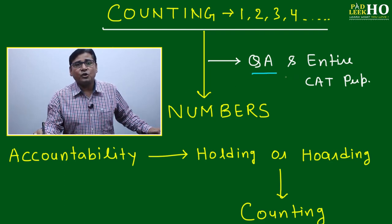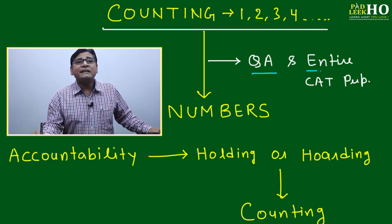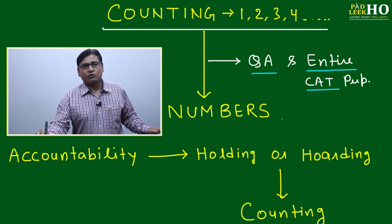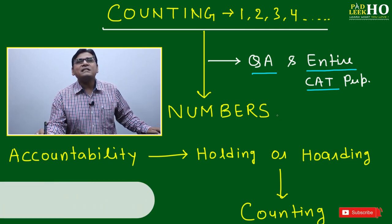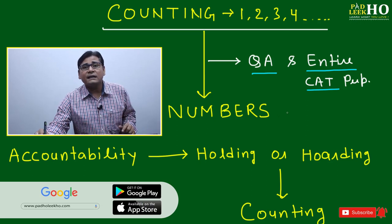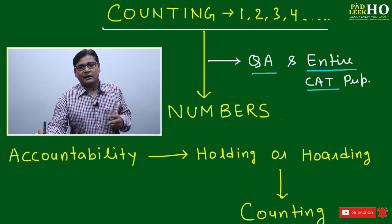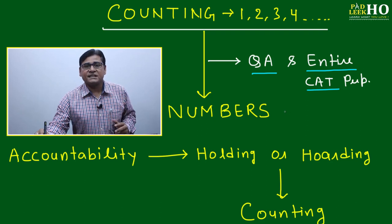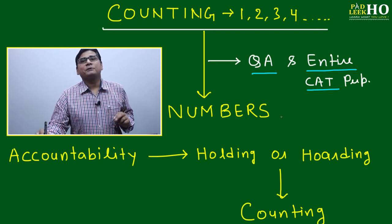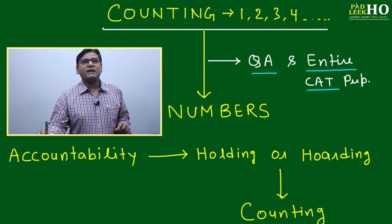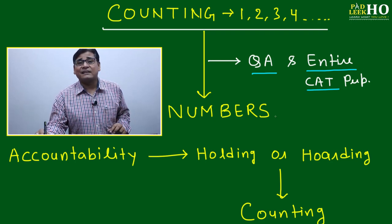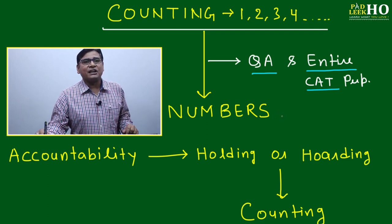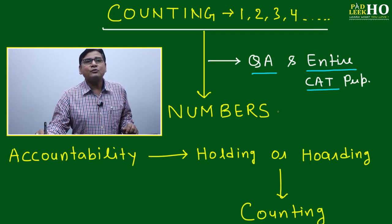This will directly help your quantitative ability — no doubt — but your entire CAT preparation will be affected if you know the basic concept of numbers. Numbers belong to one of the most important chapters under quant, and knowing about numbers will be helpful for DI and LR as well. If you are not aware of numbers, your preparation will not go in the correct direction. It is very essential — not just helpful.